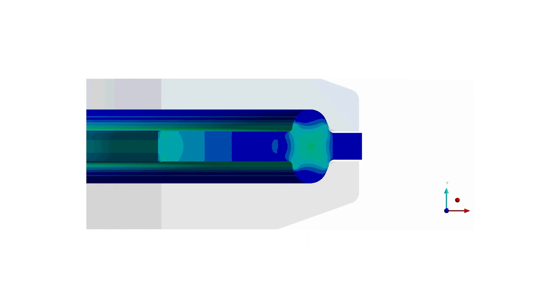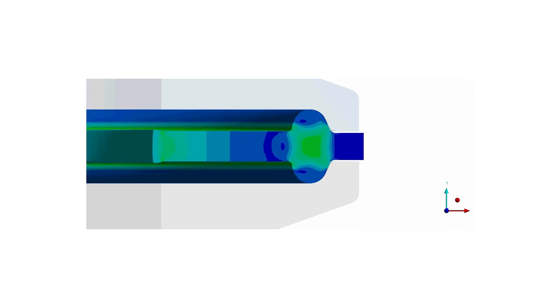Protrusion of the seal can also lead to bug traps, causing harmful bacteria to form in the hardware, which could lead to product contamination.